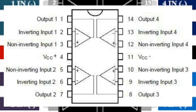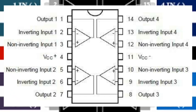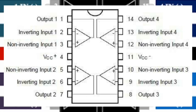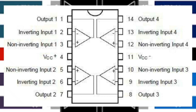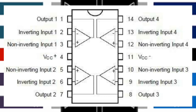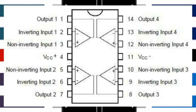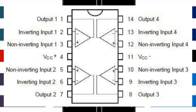Now we are going to see the TLO74. This is a quad amp — there are 4 operational amplifiers. You can use the 4 operational amplifiers for Gain, Surround, Subwoofer, Buffer Amplifier, and other applications. This is a versatile IC.